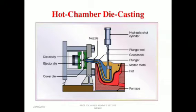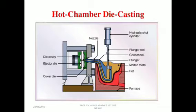The plunger then returns, allowing residual molten metal to flow back through the nozzle and the gooseneck. In summary: the furnace is attached to the machine as an internal mechanism; the furnace melts the metal from solid to liquid state, and the molten metal enters into the cylinder through a nozzle provided at the pot.